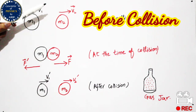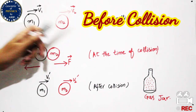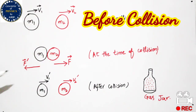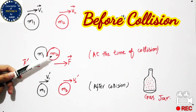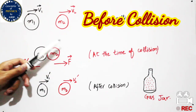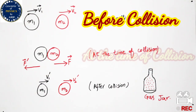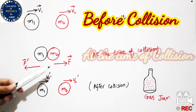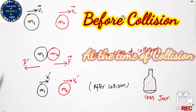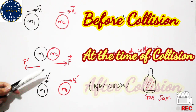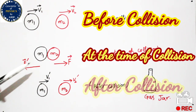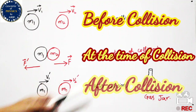This is the condition before collision. After some time, these two balls collide with each other and exert a force on one another. Ball m2 feels a force F in one direction and ball m1 feels a force F prime in the other direction. The magnitude of these two forces is the same but they act in opposite directions. This is the condition at the time of collision.